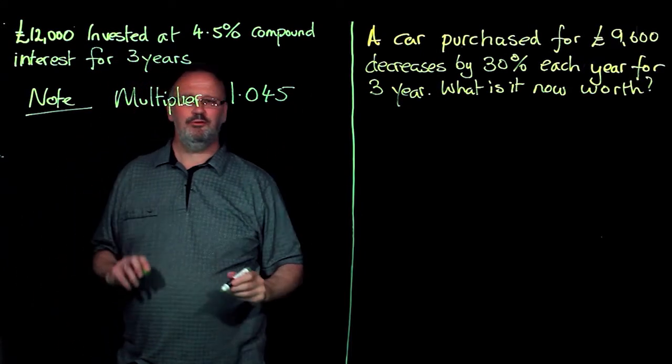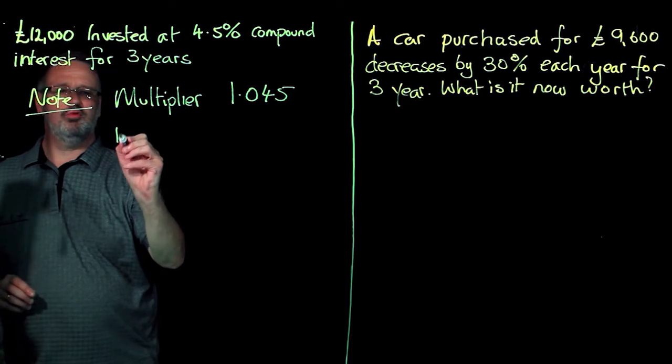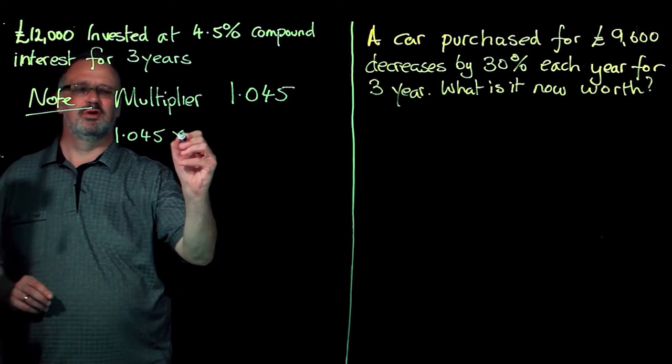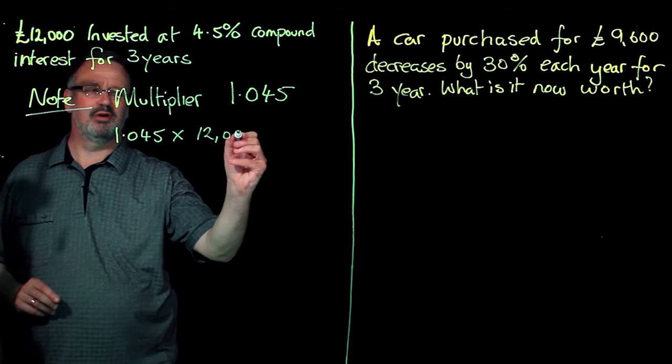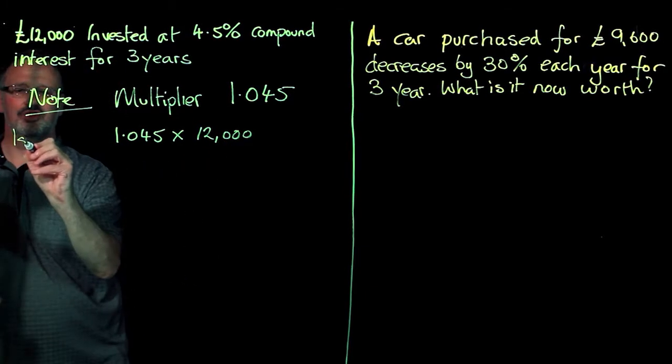So at the end of the first year, I will have 1.045 times my £12,000. That's my first year.